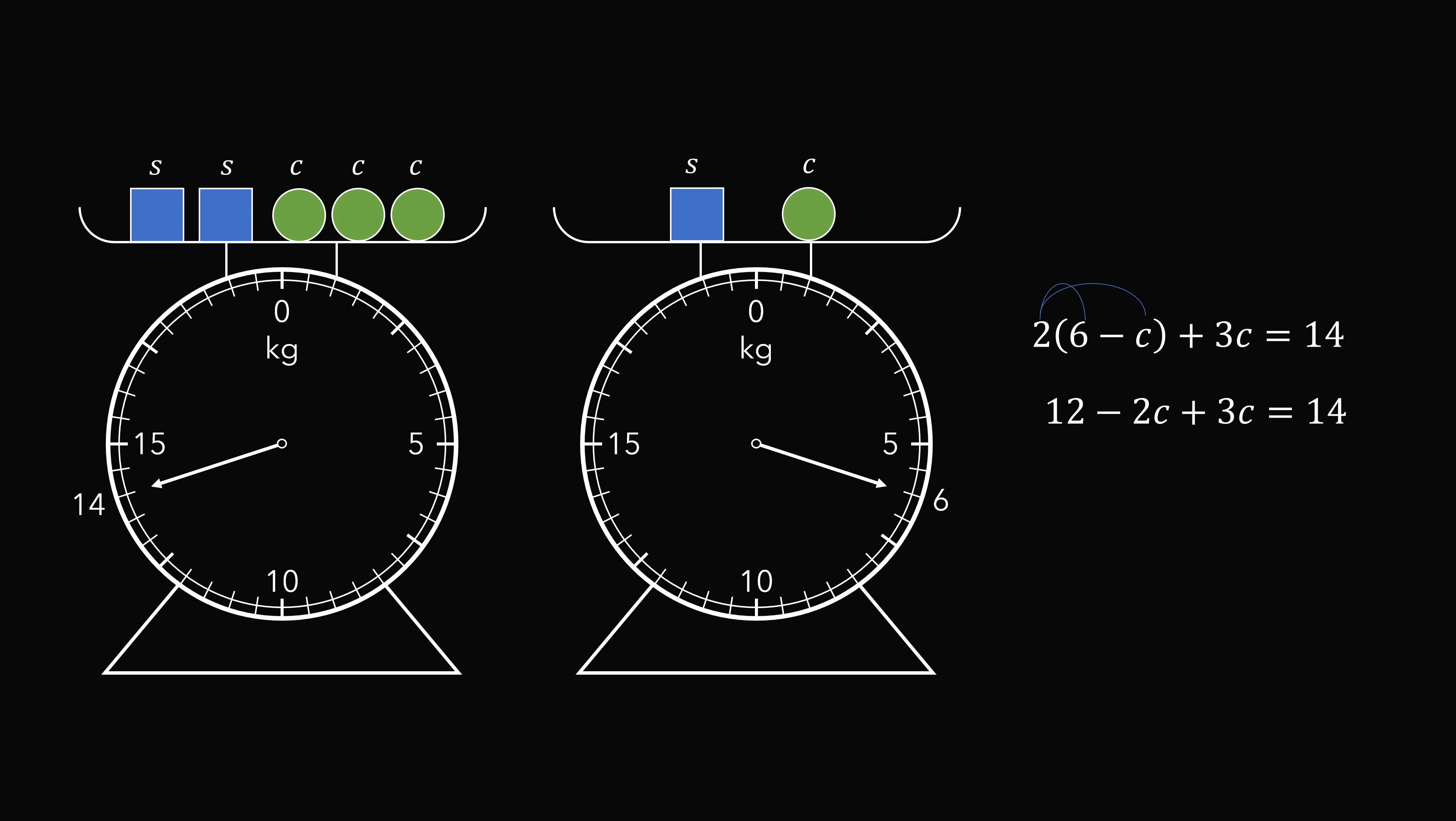So we have 12 minus 2c plus 3c equals 14. Minus 2c plus 3c equals c. This gives the equation 12 plus c equals 14. Subtracting 12 from both sides, we get c equals 2. Therefore, the weight of a single circle equals 2 kilograms. And that's the answer.